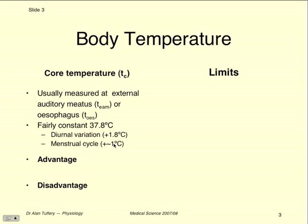There's a separate cycle imposed on that diurnal cycle: the menstrual cycle, which affects about 50% of the population. That's a cycle of about plus or minus one degree, which is fairly small in the scale of things.